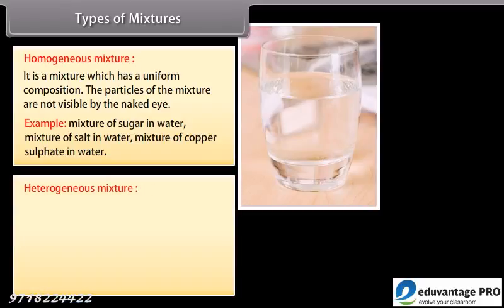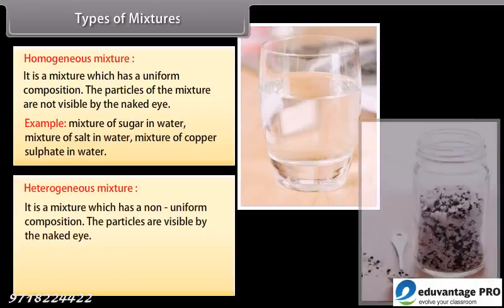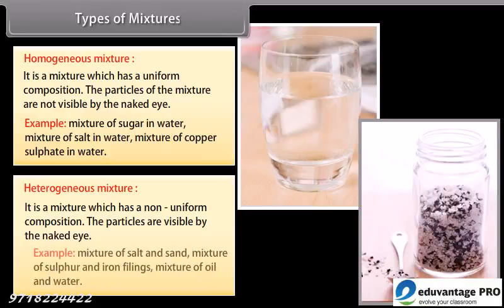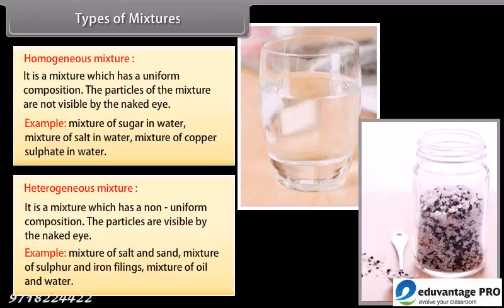Heterogeneous mixture: It is a mixture which has a non-uniform composition. The particles are visible to the naked eye. Examples include a mixture of salt and sand, mixture of sulfur and iron filings, and mixture of oil and water.